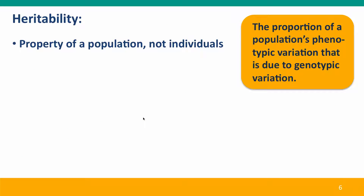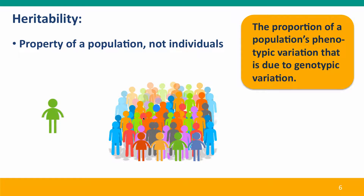Heritability, by definition, is a property of a population, not of an individual. So we can only talk about heritability in the context of a large population that we study. Within this population, the variation between individuals in their phenotypes is, to a certain extent, due to variation in their genotypes. We can't talk about variation in phenotypes or genotypes in an individual.